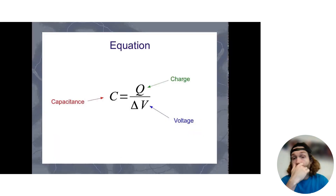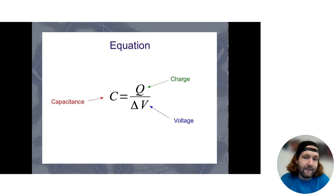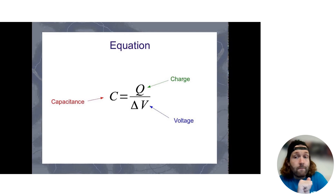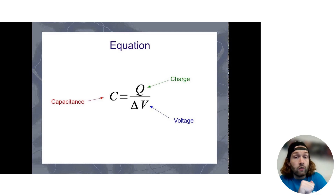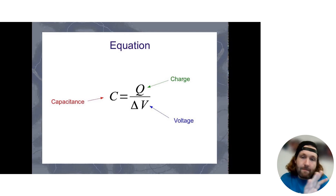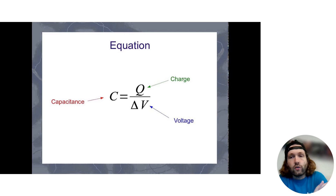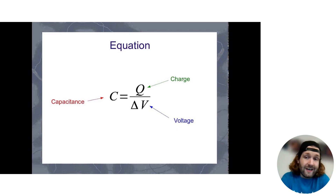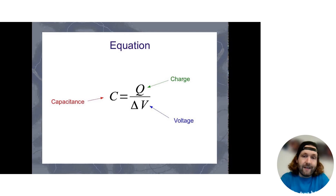Now let's talk about capacitance itself, denoted by the symbol C. It's the measure of a capacitor's ability to store charge per unit voltage. Mathematically, it's given by the equation C equals Q over V, where Q is the charge stored and V is the voltage across the capacitor.